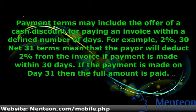For example, 2% net 31 terms mean that the payer will deduct 2% from the invoice if the payment is made within 30 days. If the payment is made on day 31, then the full amount is paid.